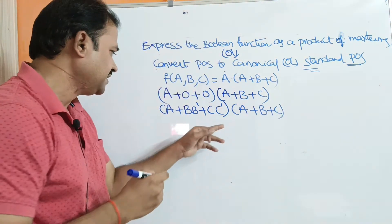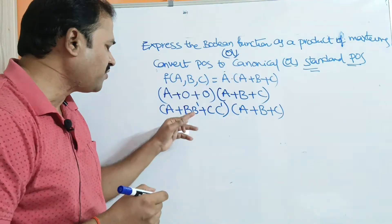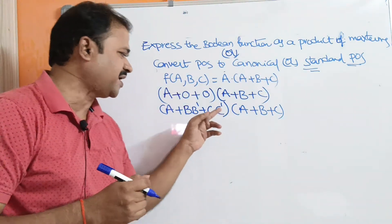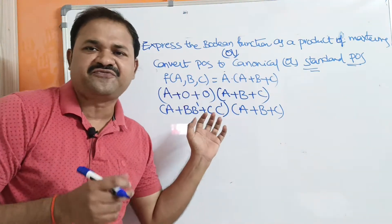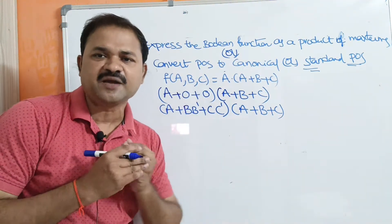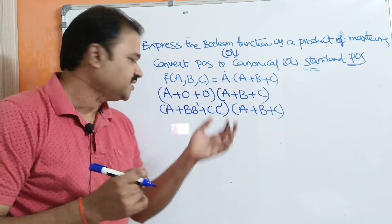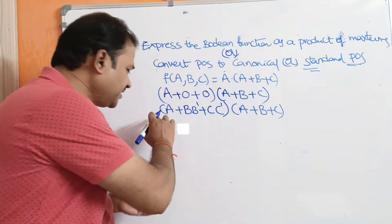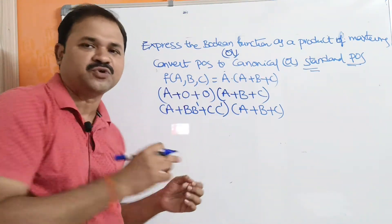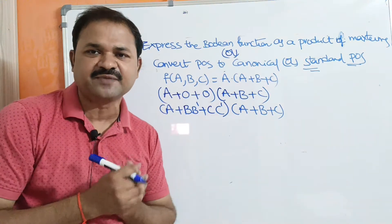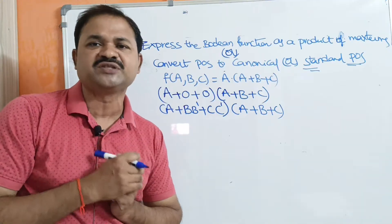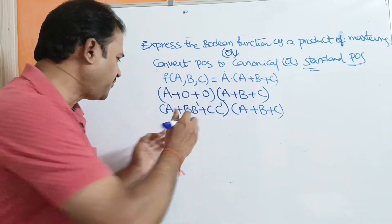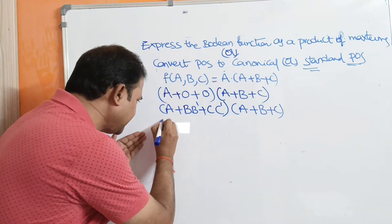Next, here we have a + b·b' + c·c'. In this term, two variables are missing. If two variables are missing, then we have to follow a different approach.